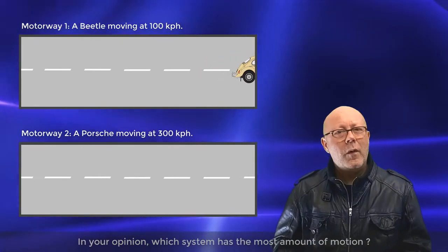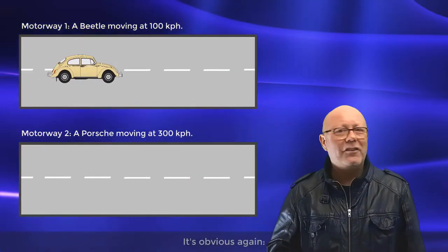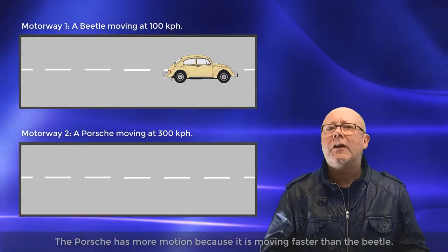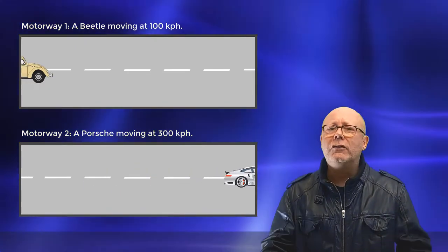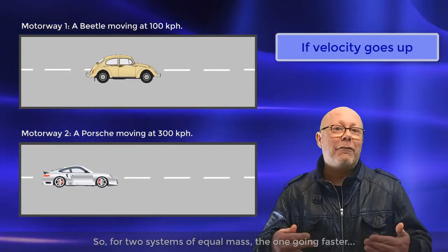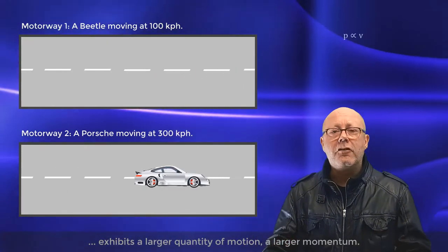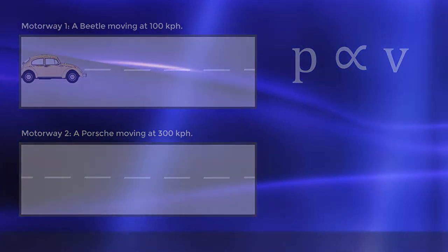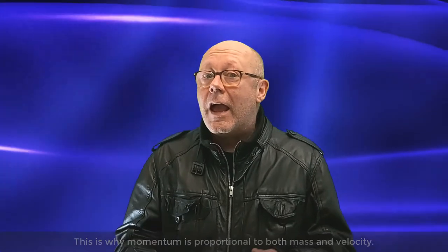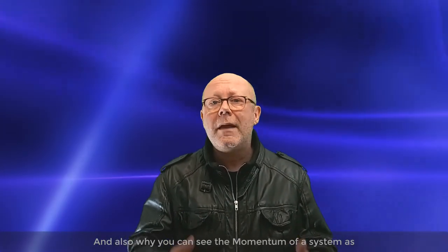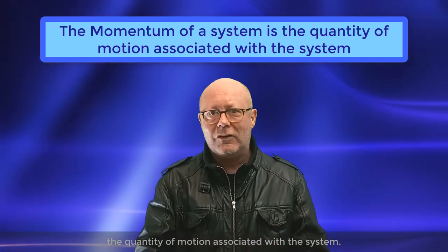In your opinion, which system has the most amount of motion? Yeah, it's obvious again. The Porsche has more motion because it is moving faster than the Beetle. So for two systems of equal mass, the one going faster exhibits a larger quantity of motion, a larger momentum. This is why momentum is proportional to both mass and velocity, and also why you can see the momentum of the system as the quantity of motion associated with the system.